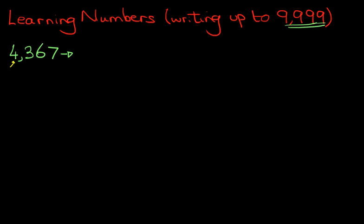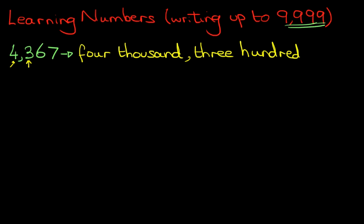Let's start with this. Next is 4000. Let's put a comma here. 4000. Next is 300. And we can write 'and' as well.